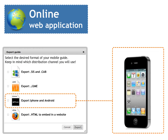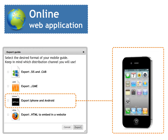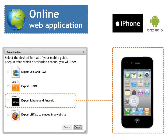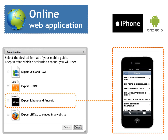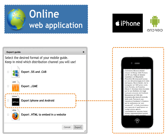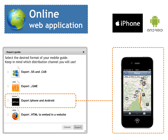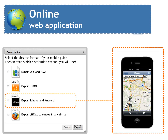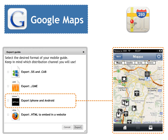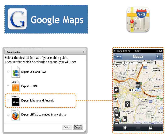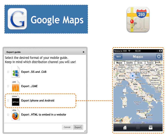Or you can choose to export an online application for iPhone and Android. This choice gives you more flexibility since, through the back office, you will always be connected with your application and will be able to update contents anytime. Moreover, using Google Maps instead of offline maps allows you to work on a wider territory.